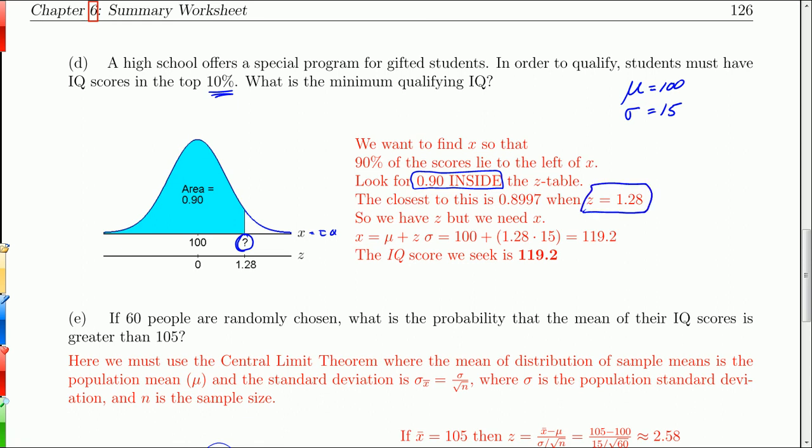Z is 1.28. So that's where this 1.28 came from. It came from looking for 0.90 inside the table. But now that's not an IQ, that's a Z score. But what this says is that the IQ we seek is 1.28 standard deviations above the mean. In other words, we use this formula: X equals mu plus Z times sigma, which is 100 plus 1.28 times 15. When you put that in the calculator, you get 119.2. So the IQ we're looking for is 119.2.